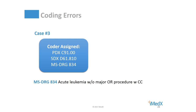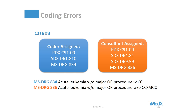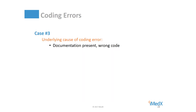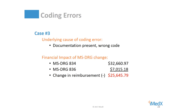Our next case is where the coder assigned D61.810 for anti-neoplastic chemotherapy induced pancytopenia. The consultant changed the code to D64.81, anemia due to anti-neoplastic chemotherapy, and added a code for other secondary thrombocytopenia. The rationale was that rather than supporting pancytopenia — a deficiency of all three elements of the blood — the discharge summary stated the patient had anemia due to the chemotherapy and thrombocytopenia. While documentation was present, the coder assigned the wrong code. The originally assigned secondary diagnosis for chemotherapy induced pancytopenia was a major CC; however, when the code was changed to D64.81, which was neither a CC nor an MCC, the reimbursement decreased by well over $25,000. These are the types of coding oversights the RACs love to find.